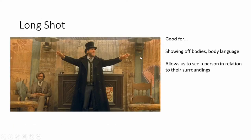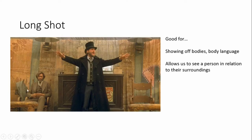By contrast you can have a long shot, where we normally see roughly the whole person. This is almost a long shot — just under, because we don't quite see his feet — but you do see a lot of space around him. That's really good for showing off somebody's body, costume, or body language, allowing us to see a person in relation to their surroundings and to other people.